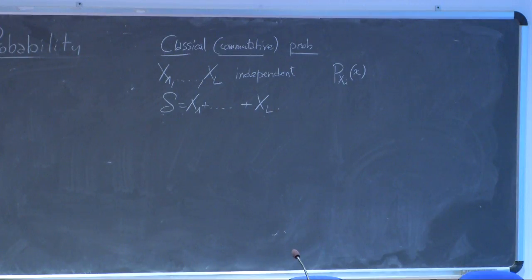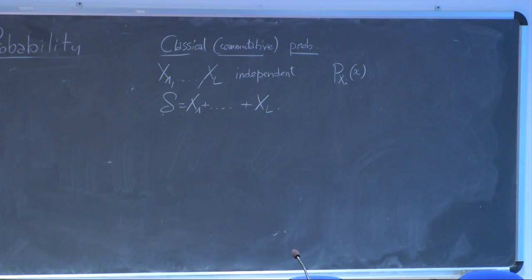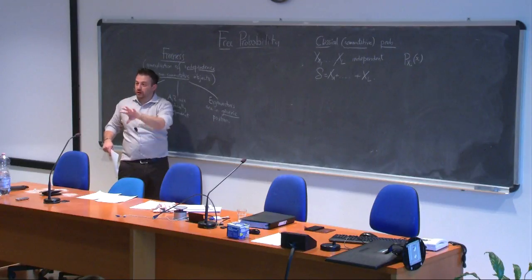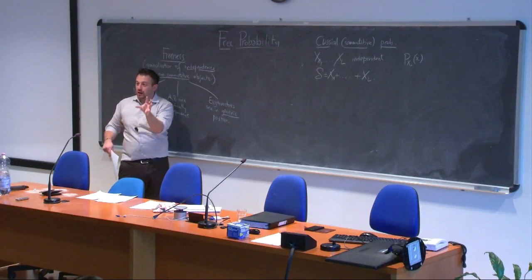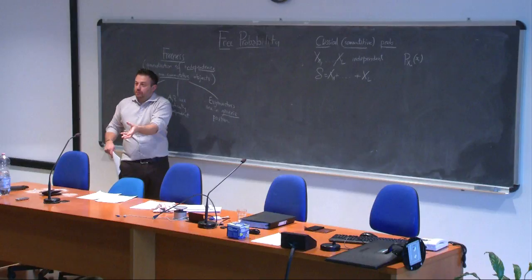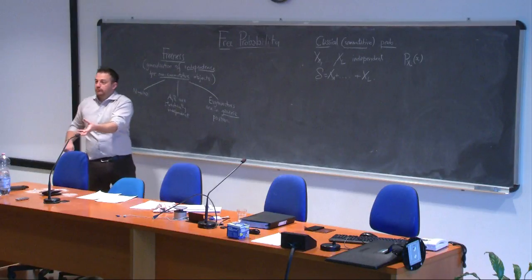The characteristic function is the generating function of moments; its logarithm is the generating function of cumulants. This is just a crash course on classical probability. If you have the sum of classical random variables, can we draw a dictionary between the two fields and find objects that behave the same way for random matrices?